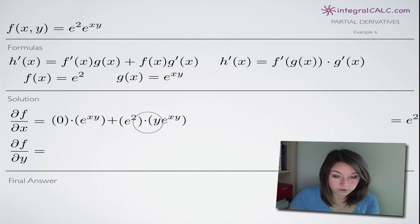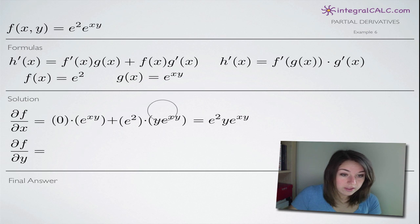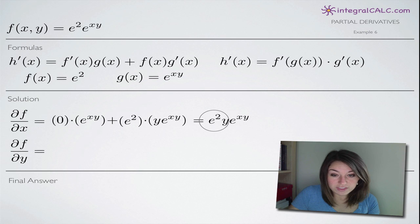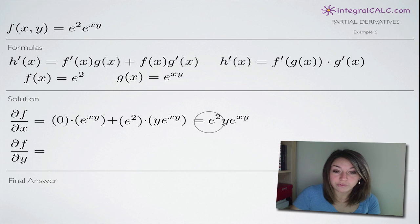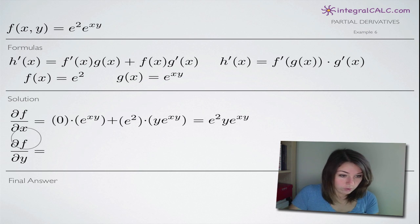Knowing that, we can get the final answer for our partial derivative with respect to x. We just simplify: the first term is multiplied by zero, so it goes away completely, and we're left with e squared — which acts like a coefficient since it's a constant number — times ye to the xy. So our partial derivative with respect to x is e squared times ye to the xy.